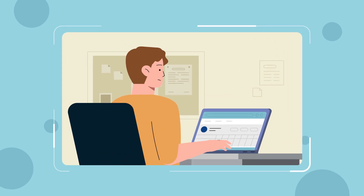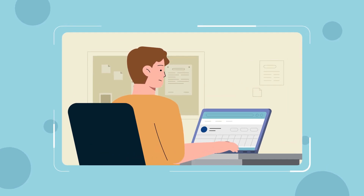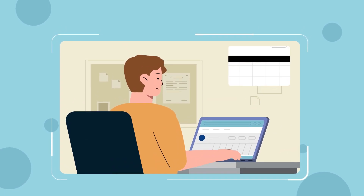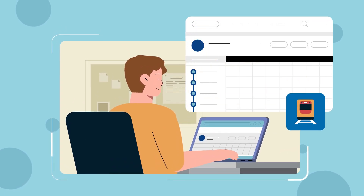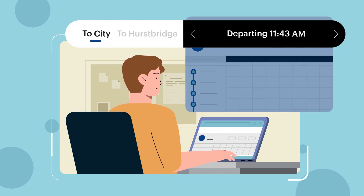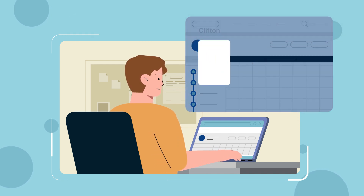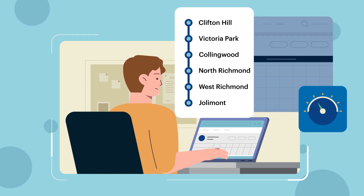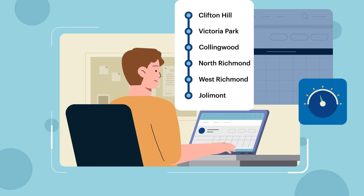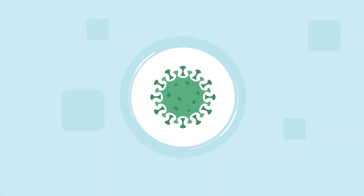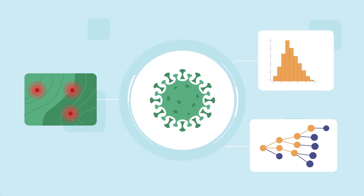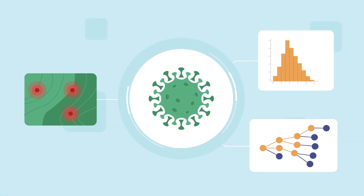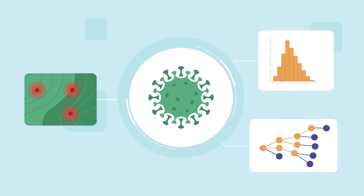We all use models in our everyday life. For example, a train timetable lists when trains are expected to arrive based on their departure times, the number of stops and the average speed of the train. Similarly, an infectious disease model tries to show what might happen in an infectious disease outbreak.